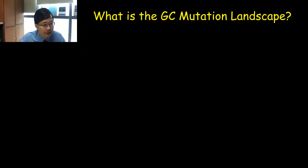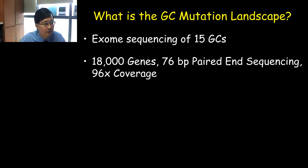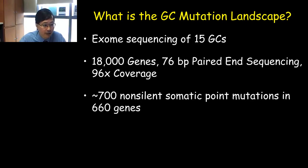The first cancer I will discuss is gastric cancer. A number of years ago, we wanted to understand the mutation landscape of gastric tumors. We did a straightforward exome sequencing study where we took 15 paired samples from gastric cancer patients — the surgical tumor sample and the matched gastric normal tissue. Using Agilent SureSelect capture coupled to Illumina sequencing, we sequenced the coding regions of 18,000 genes with 76 base pair paired-end sequencing at an average coverage of about 100-fold. We then called somatic variants using standard bioinformatic pipelines.